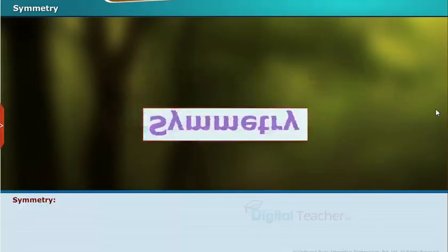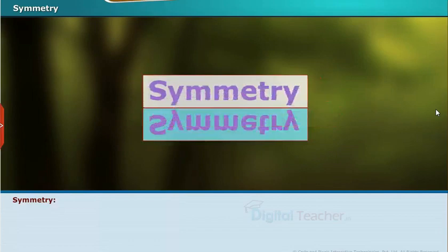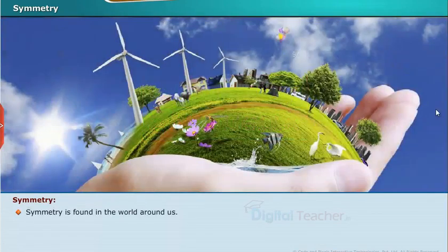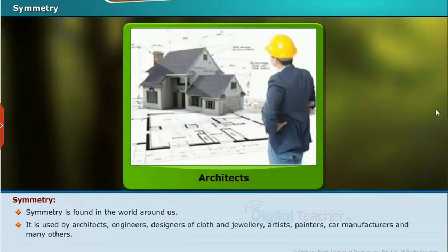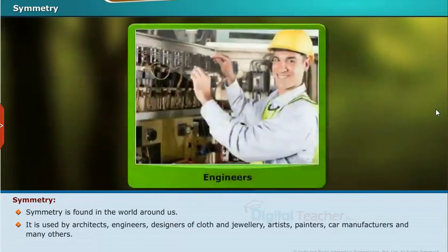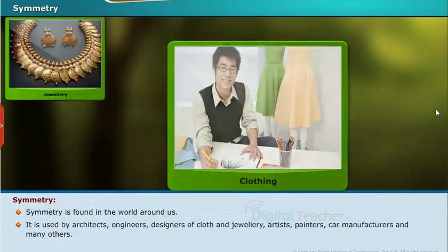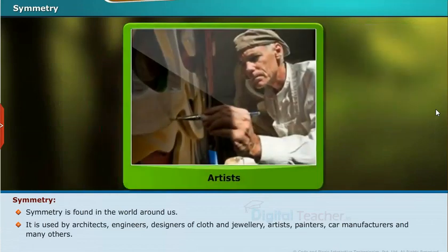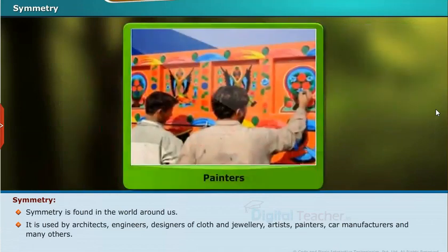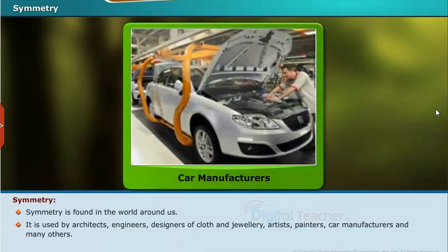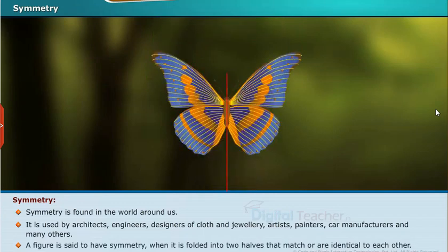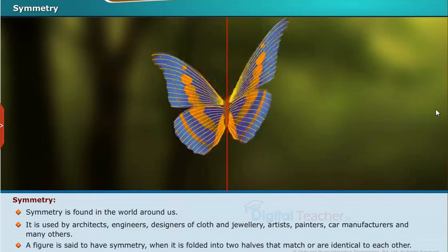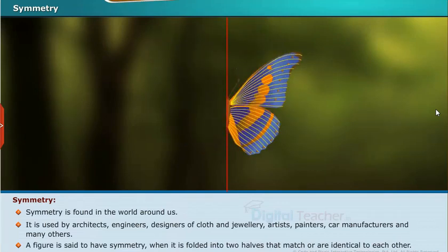Symmetry is found in the world around us. It is used by architects, engineers, designers of cloth and jewelry, artists, painters, car manufacturers and many others. A figure is said to have symmetry when it is folded into two halves that match or are identical to each other.